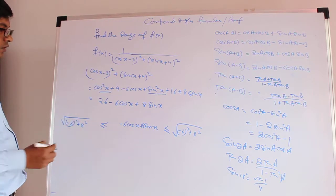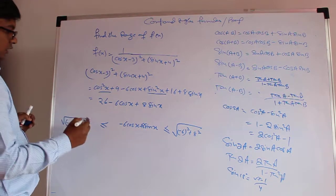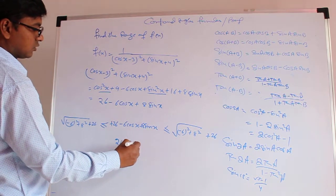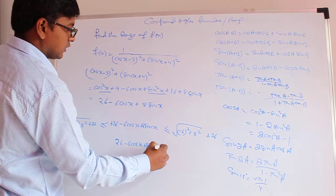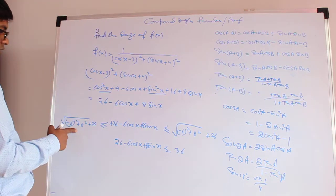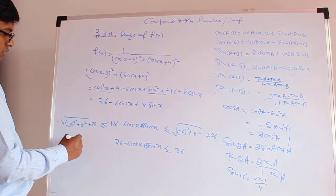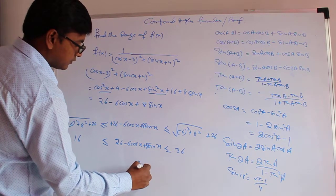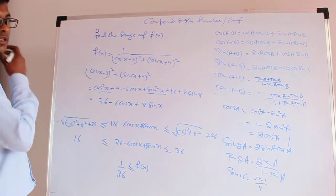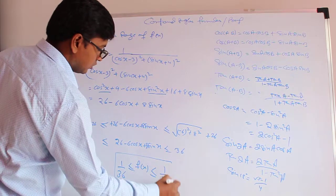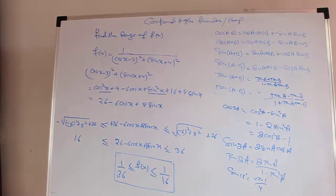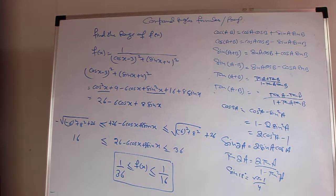For the term −6cos x + 8sin x, the maximum value is √(6² + 8²) = √(36 + 64) = √100 = 10, and the minimum is −10. Adding 26 to all sides: the denominator ranges from 26 − 10 = 16 to 26 + 10 = 36. Since f(x) = 1 / denominator, when the denominator is maximum (36) f(x) is minimum (1/36), and when the denominator is minimum (16) f(x) is maximum (1/16). So the range of f(x) is [1/36, 1/16].